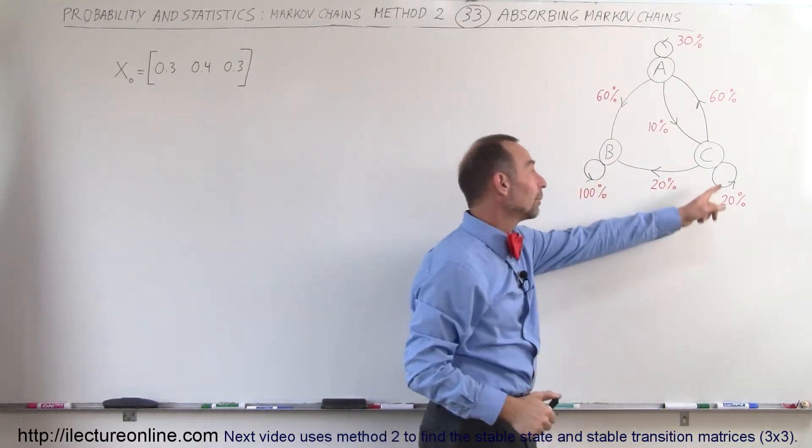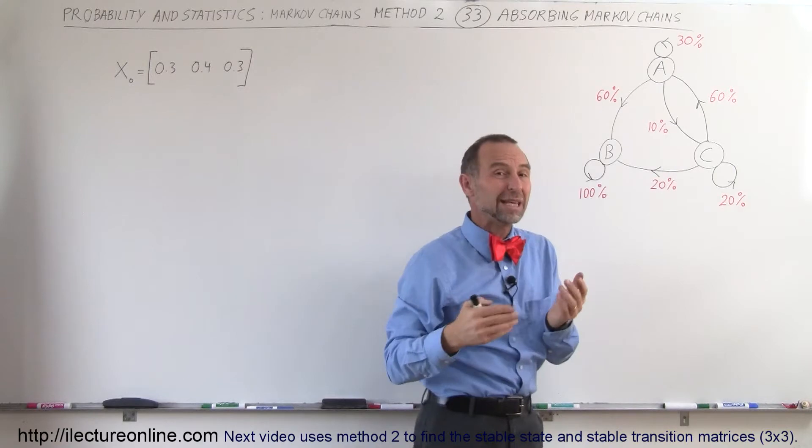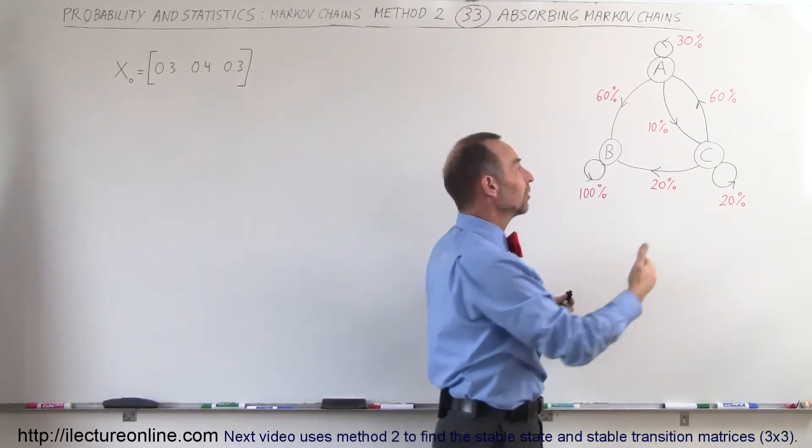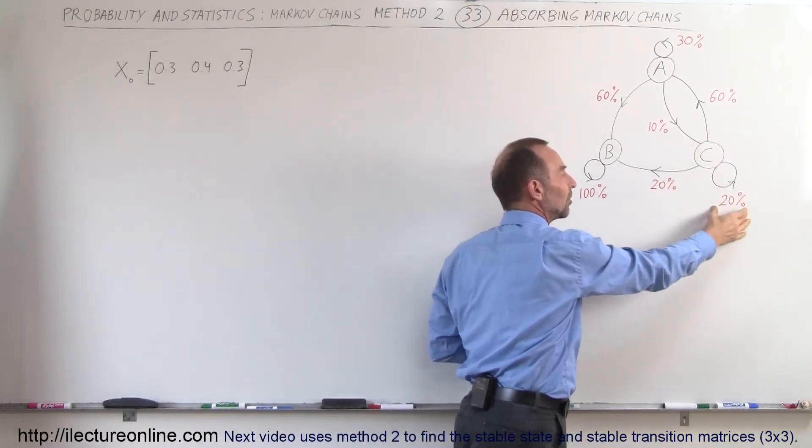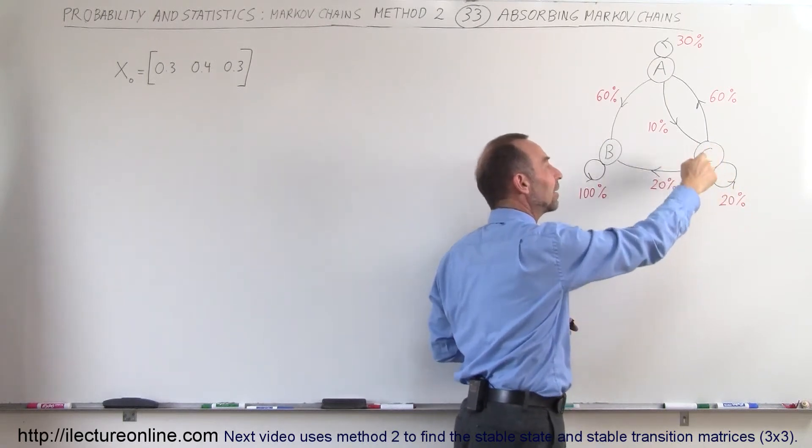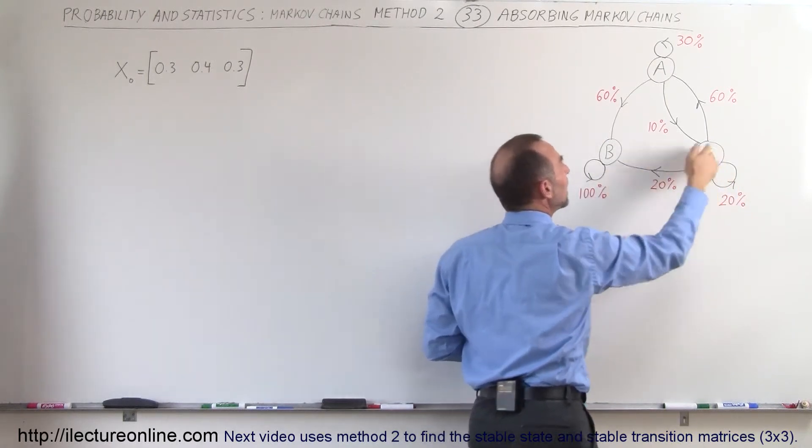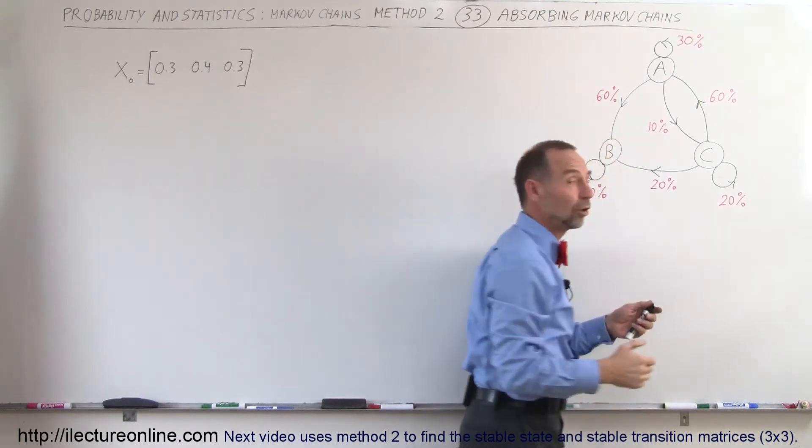Store C will only retain 20% of its customers, meaning of the hundred percent of customers that went to store C, only 20% will still shop at C the next week, 20% will go to B, and 60% will try store A.